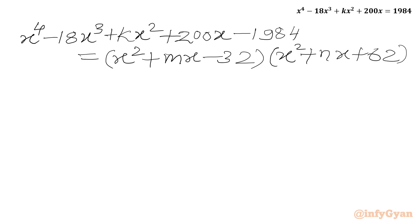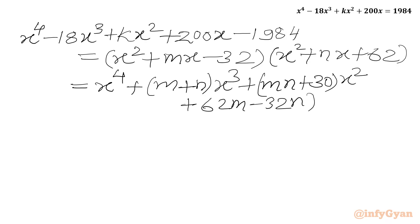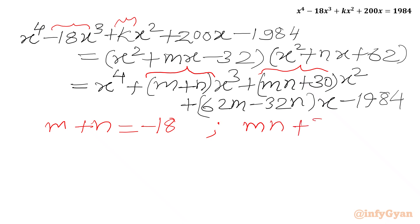Now we multiply these two brackets. We get x^4, and the coefficient of x^3 is (1 + m + n), the coefficient of x^2 is (mn + 30), the coefficient of x is (62m minus 32n), and the constant is minus 1984. Comparing coefficients of x^3 from both sides: m plus n must equal minus 18. Comparing coefficients of x^2: mn plus 30 equals k.